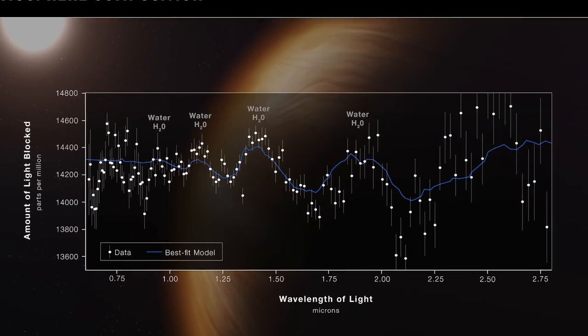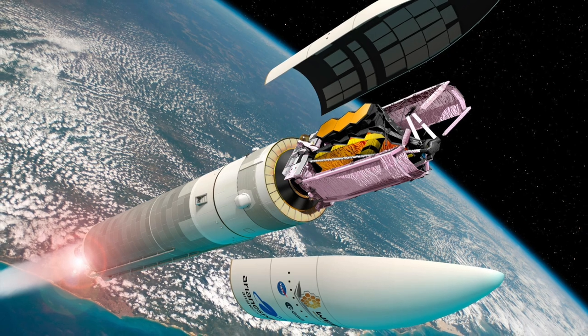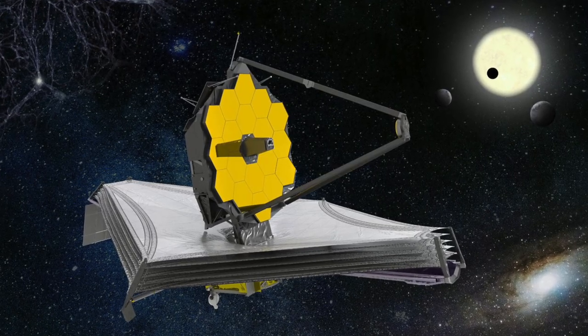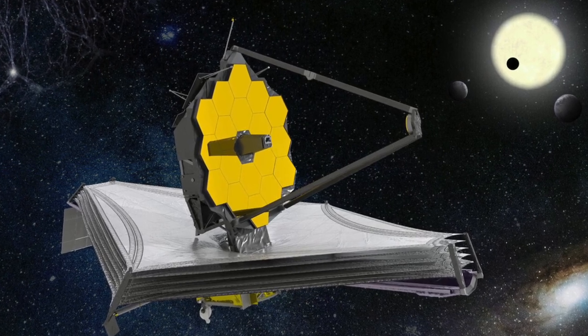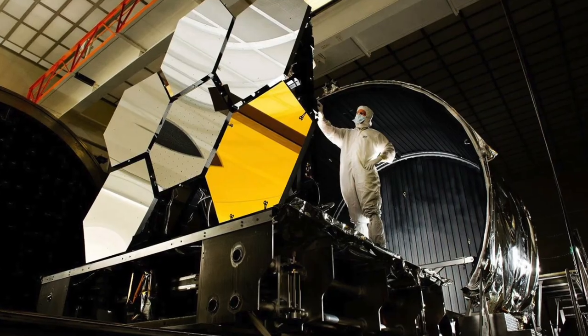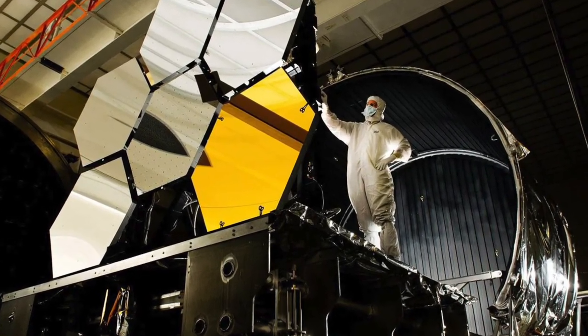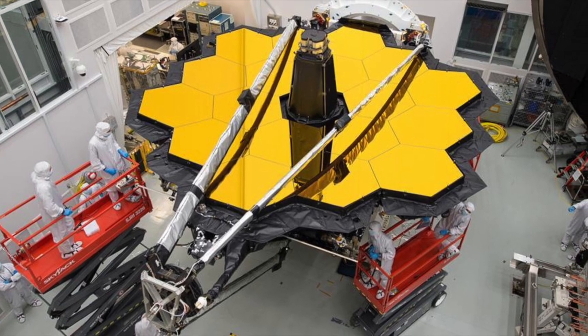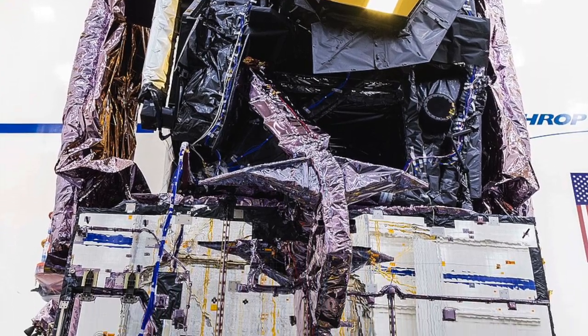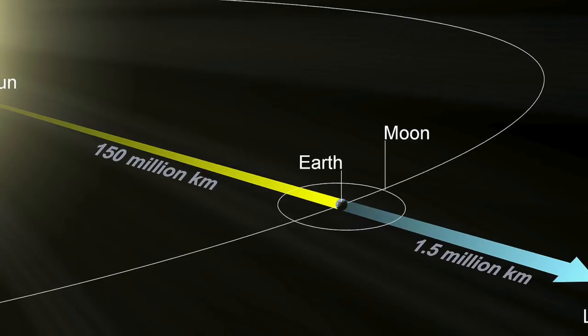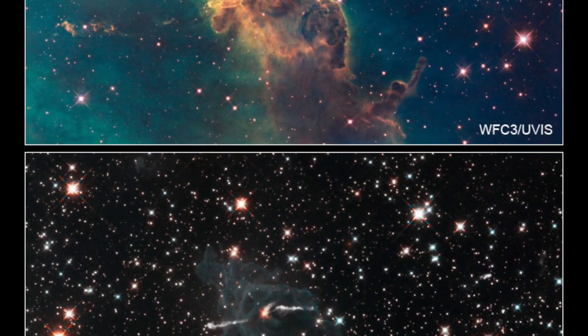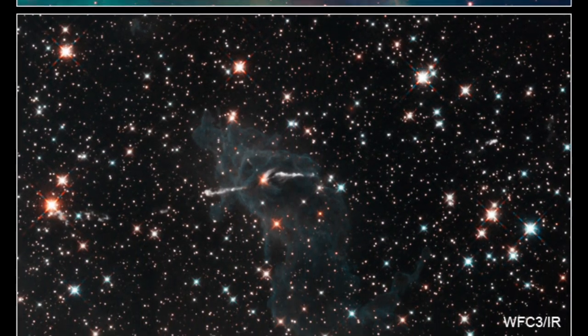While within the shadow of the sunshield, JWST's field of regard is limited, allowing it to see 40% of the sky from any given position. However, over a period of six months, it can observe all of the sky. In summary, the James Webb Space Telescope's unique halo orbit and sophisticated sunshield system enable it to conduct precise infrared observations while maintaining a stable temperature and avoiding interference from external light and heat sources. These features are key to unlocking the mysteries of the universe and advancing our understanding of celestial phenomena.